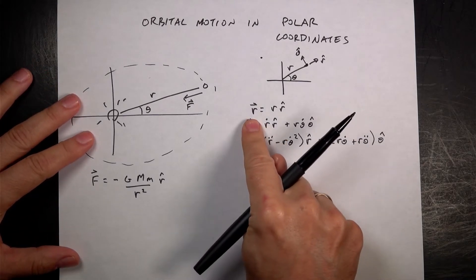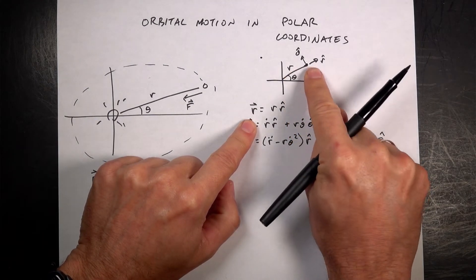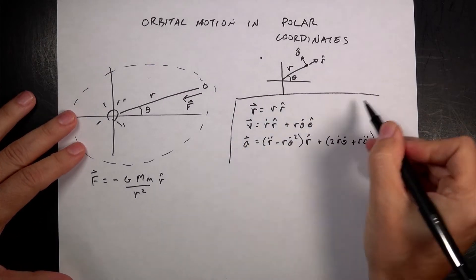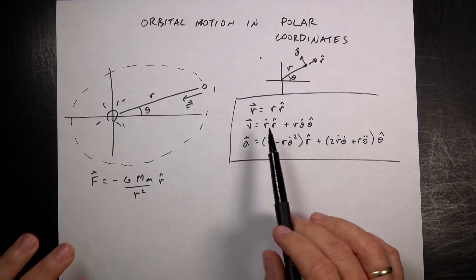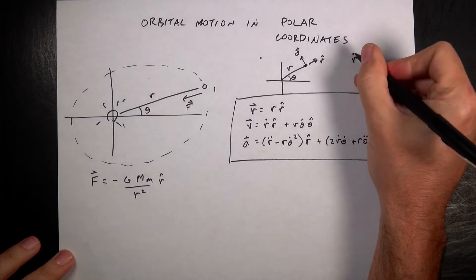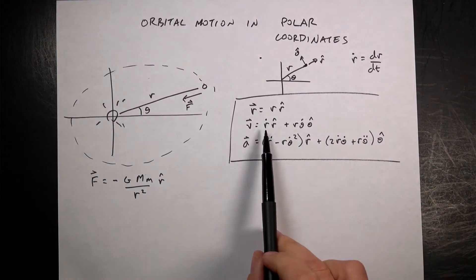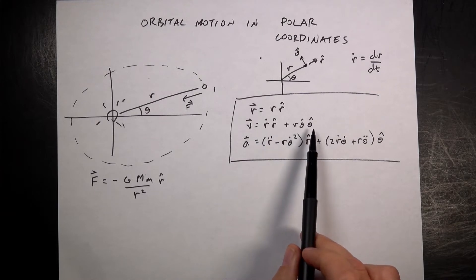Because r-hat and theta-hat are not constant, when you take derivatives you get a more complicated expression. I derive the acceleration in polar coordinates in another video, so I won't do that here. If you take the derivative of position to get velocity, you get: velocity = r-dot · r-hat + r · theta-dot · theta-hat, where r-dot means dr/dt.